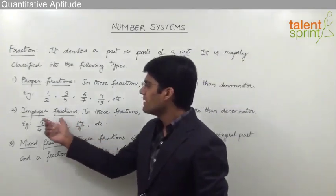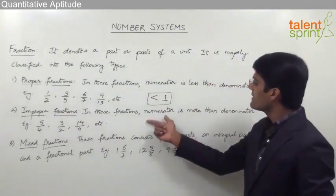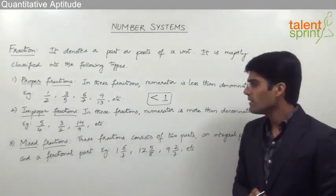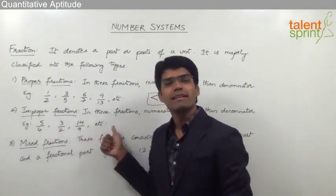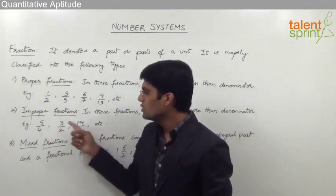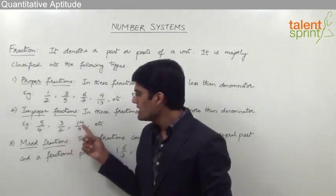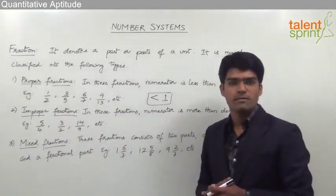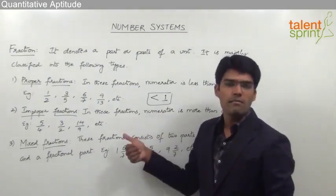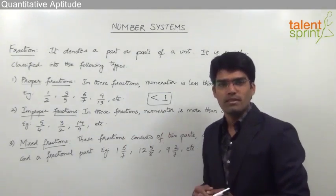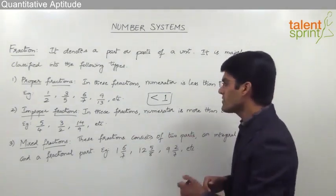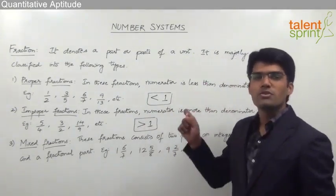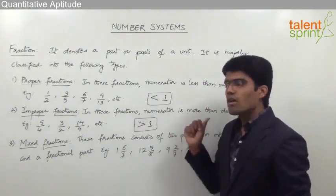The second type is improper fractions. These are fractions where the numerator is more than the denominator — that is, A is greater than B. Some examples are 5/4, 3/2, 14/9, and so on. In each of these fractions, the numerator is more than the denominator: 5 is more than 4, 14 is more than 9, 3 is more than 2. All such fractions where the numerator is more than the denominator are called improper fractions, and they are always greater than 1.